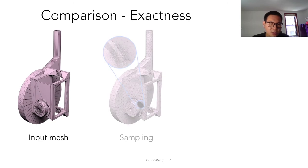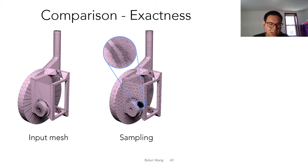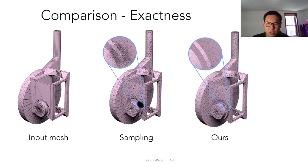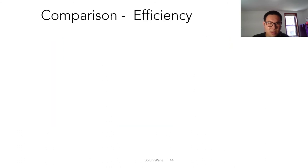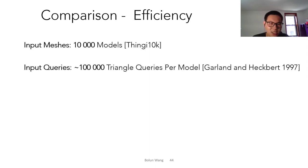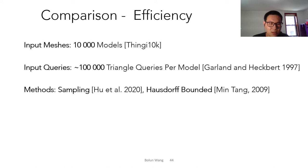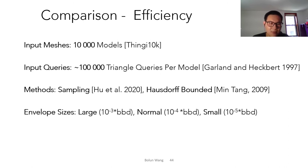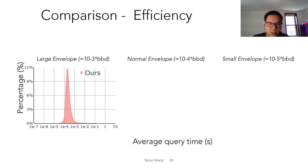Recall the over-refinement problem caused by inexactness — using our envelope, that problem disappears completely. We also did a large-scale experiment comparing with other methods, using 10,000 models from the Thingi10K dataset as input meshes, generating around 100,000 query triangles per model. We compare with the sampling method and the Hausdorff-bounded method across different envelope sizes: large, normal, and small.